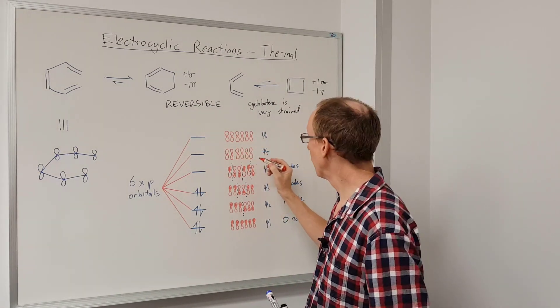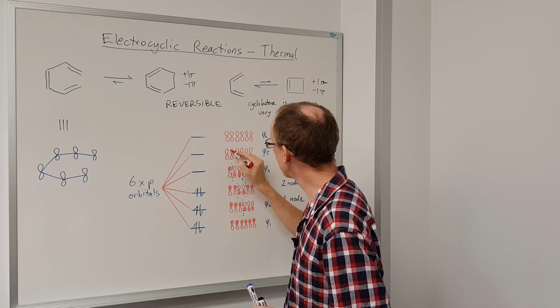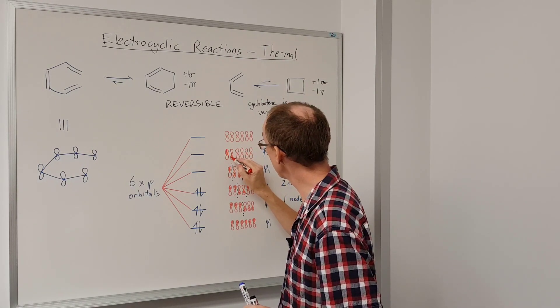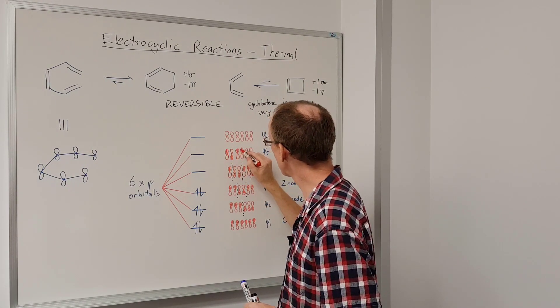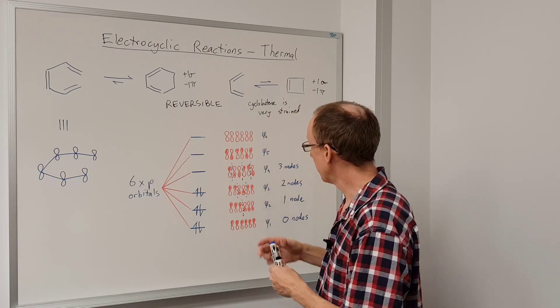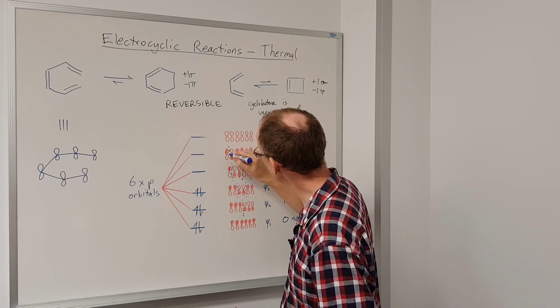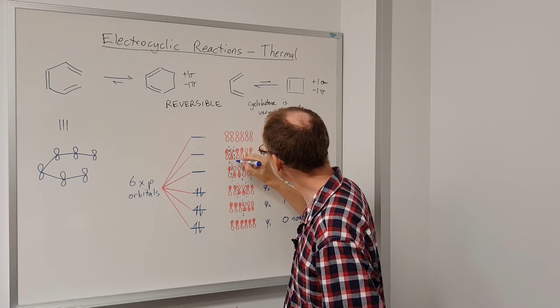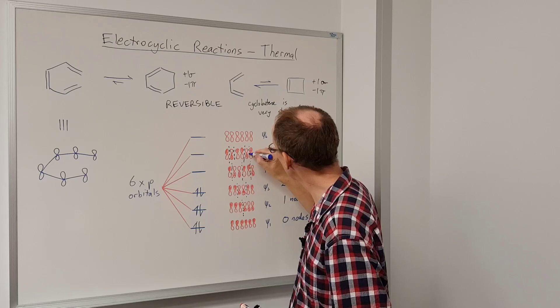Psi five will have four nodes. So we're going to have these two out of phase, then just one in phase interaction there, like so. So our four nodes are going to be here, here, here, and here.